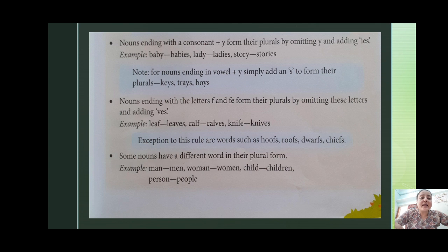Nouns ending with the letters F and FE form their plurals by omitting these letters and adding VES. ऐसे nouns जिसका end F से होता है, consonant plus F, तो हमें F निकाल के उसकी जगह VES लगा देना है। For example, leaf → leaves, calf → calves, knife → knives.